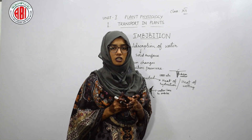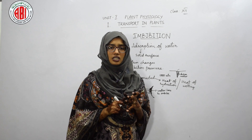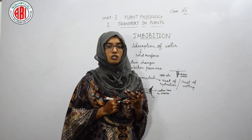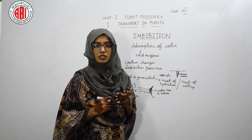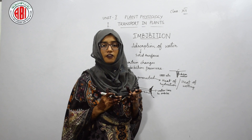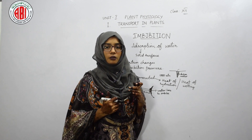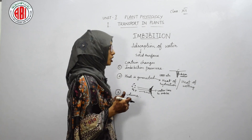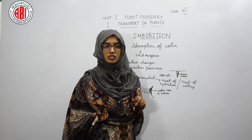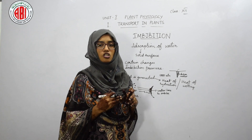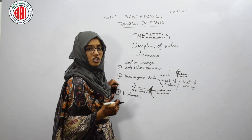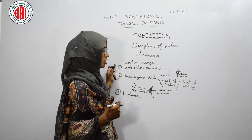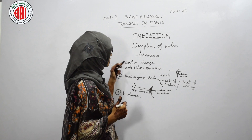Imbibition also helps in increasing or changing the volume. For example, during rainy season, wooden doors swell up due to imbibition — the volume of the doors changes and we find difficulty closing them. So, the changes observed during imbibition are: imbibition pressure is generated, heat is released, and volume is changed.